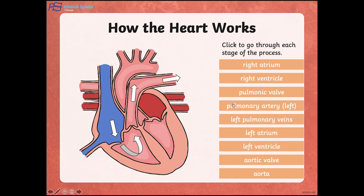The lungs oxygenate the blood by exchanging gases, and the blood flows back into the heart through the pulmonary veins — more specifically, the left pulmonary veins. The blood becomes oxygen-rich by absorbing oxygen in the lungs and is carried from the lungs to the left atrium of the heart through the pulmonary veins.